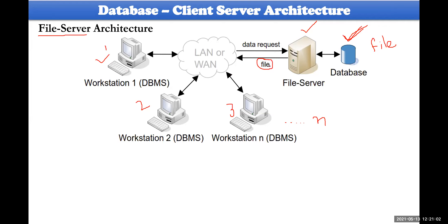So if the user requires only 2 KB of data, the file server sends approximately 1 GB of data. This is the basic problem — entire data is collected from the database and sent to the user, even when only a tiny fraction is needed.